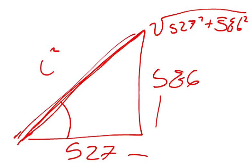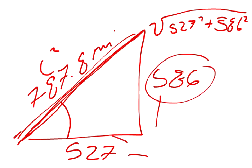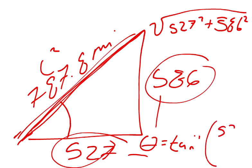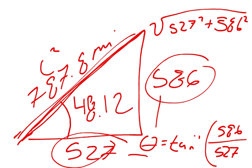So now what is the angle? Well, we have our opposite over our adjacent, we'll just use tangent this time. So our angle equals tangent to the negative one, the inverse tangent, times our opposite, 586 over 527. So our angle ends up being approximately 48.12 degrees.